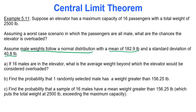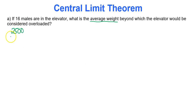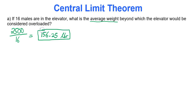Part A: if 16 males are in the elevator, what is the average weight beyond which the elevator would be considered overloaded? That elevator can hold up to 2,500 pounds. Distributed among 16 males, that is about 156.25 pounds on average per person that would be allowed. Not very much.